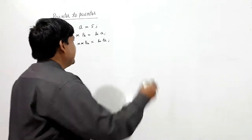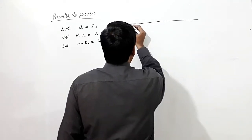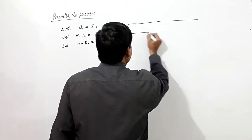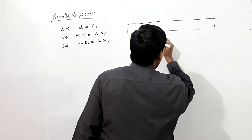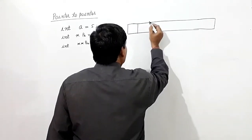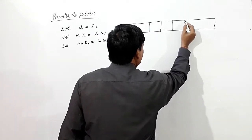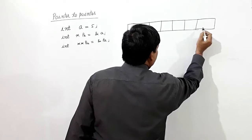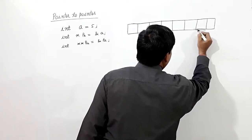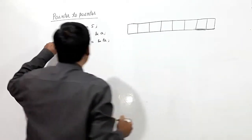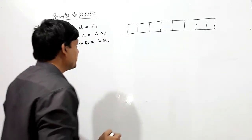What will happen here? Because I am taking integer, it will be holding 4 bytes. So 4 bytes will be allocated for 'a', for 'pa', and for 'ppa'.